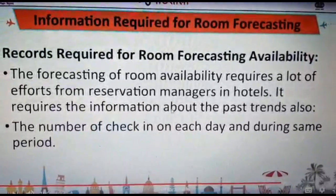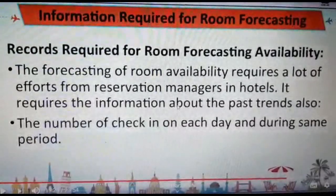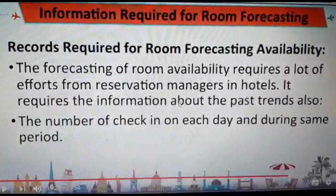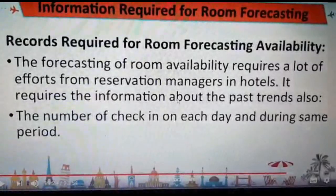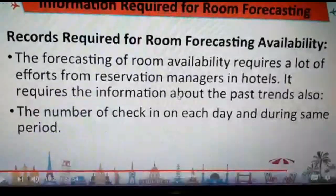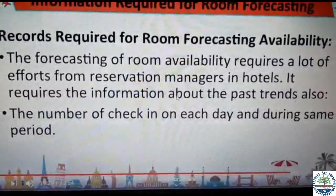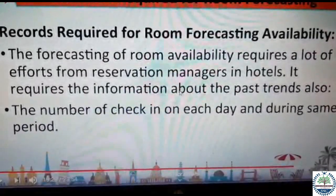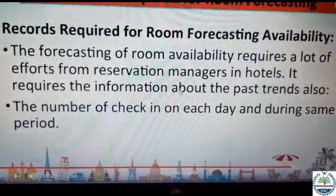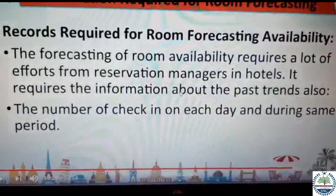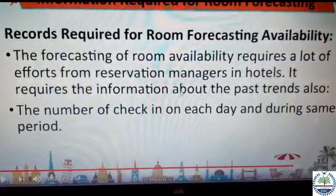We shall move on to the fourth subtopic of your second unit and talk in detail about the four parts we discussed in the previous video on information required for room forecasting. The first heading is records required for room forecasting availability. Forecasting room availability requires a lot of effort from reservation managers and the front office manager. It requires a lot of information from past trends — a trend followed over a year, two years, or a five-year policy must be kept in account.